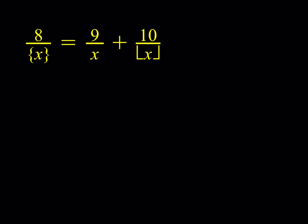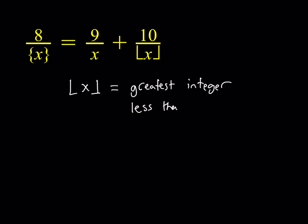So how is floor value defined? The floor value of x is basically the greatest integer — it's also called the greatest integer function — less than or equal to x. It's kind of like rounding the number down to the nearest integer. We say rounding down because we're always rounding down, and that's why it needs to be less than or equal to x.